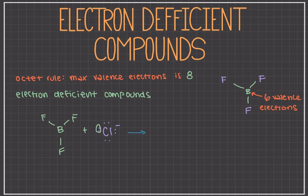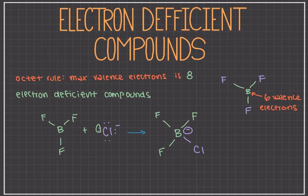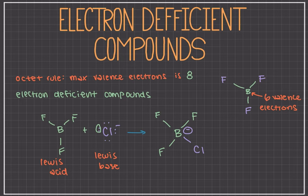In such reactions, the electron deficient compound acts as a Lewis acid. A Lewis acid is a species that accepts an electron pair to form a new bond. The species that donates the electron pair to the Lewis acid to form a new bond is the Lewis base. So here, the boron trifluoride is the Lewis acid and the chloride ion is the Lewis base. As a result of this specific reaction, the boron has a completed octet now, and the octet completing is a really big driving force of this reaction.